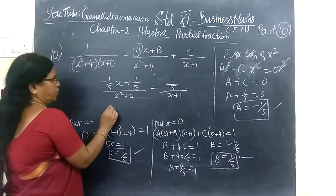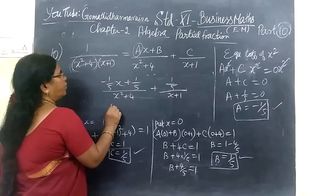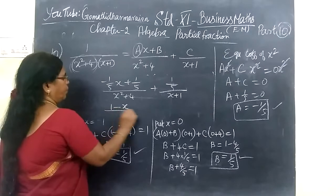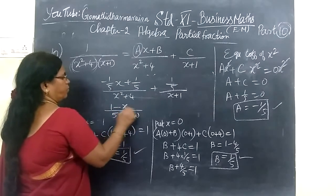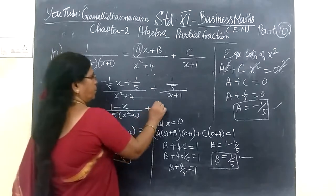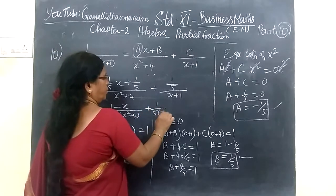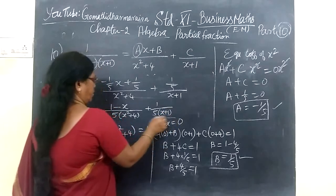So this equals (1 minus x) by 5(x² plus 4) plus 1 by 5(x plus 1). Here is correct. Now here 1, then here minus x. So this is the correct answer.